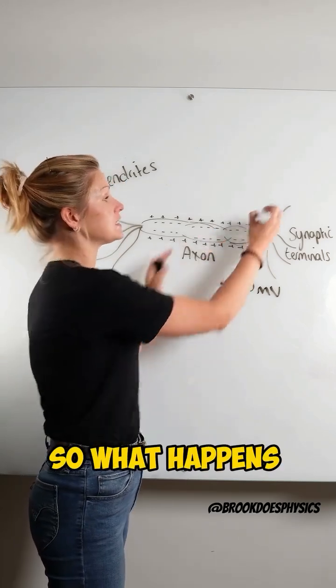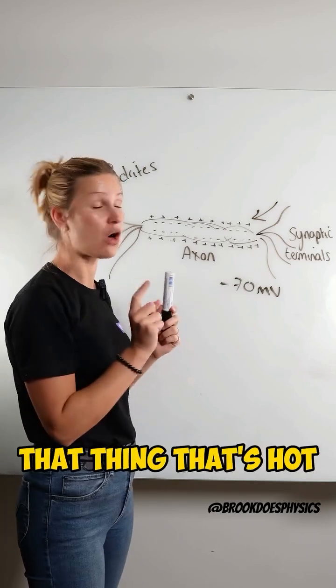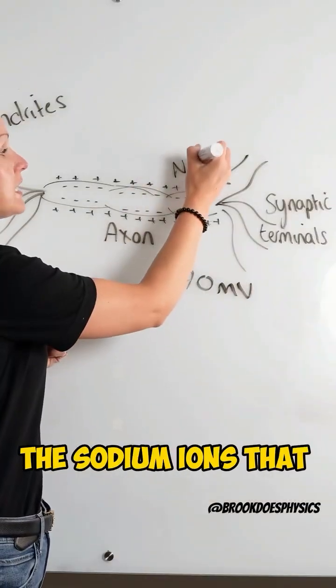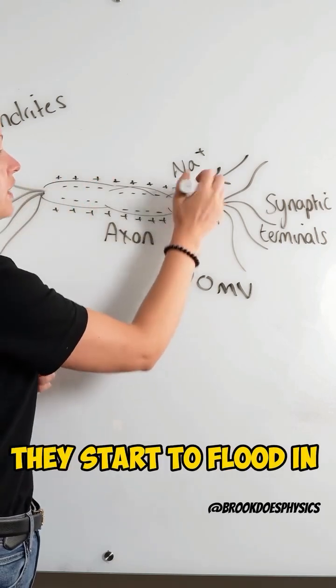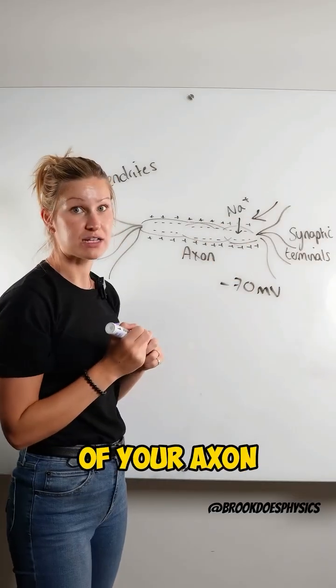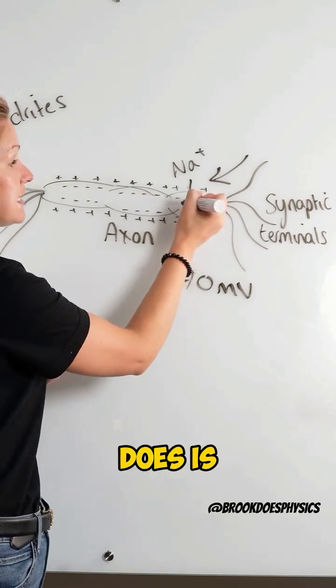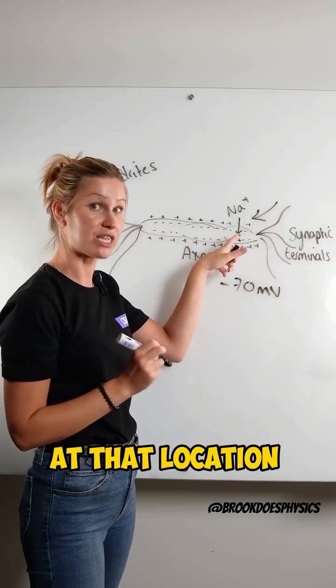When a signal comes along and you've touched that hot object, the sodium ions that are outside of your axon start to flood into the middle of your axon, and that temporarily makes it more positive at that location.